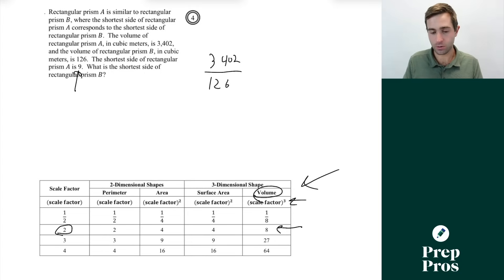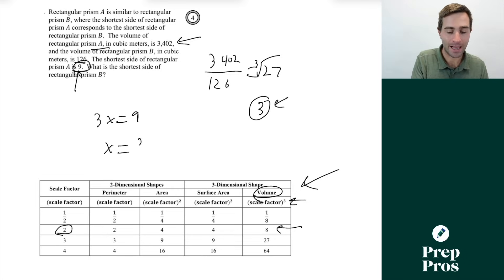So the big mistake here is this is not our scale factor yet we need to cube root the 27 that's going to give us that our scale factor is 3. Now we also have to be careful here so we know A is the larger shape because it has a volume of 3,402 and B is the smaller so if the shortest side of A is 9 that means 9 is 3 times greater than the shortest side of B so we could write this as essentially 3x is equal to 9 that's going to give us that x or that shortest side of B is going to be equal to 3.